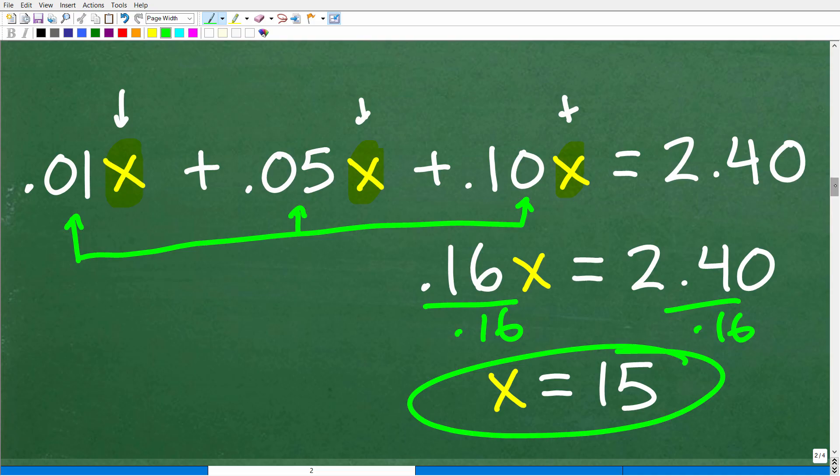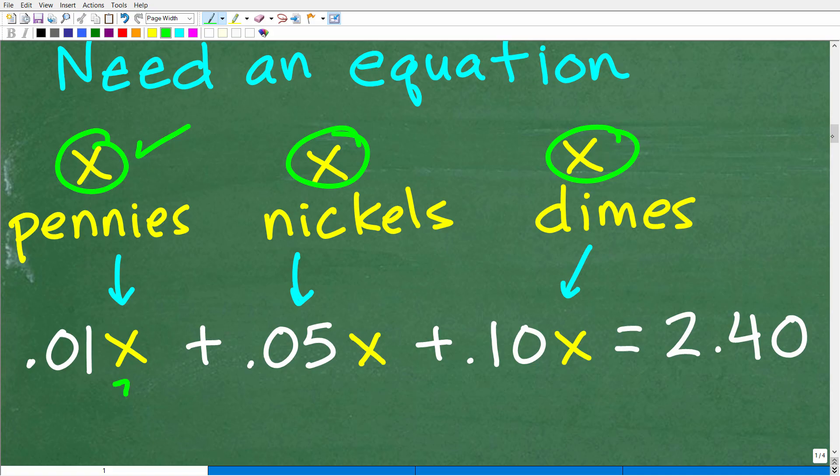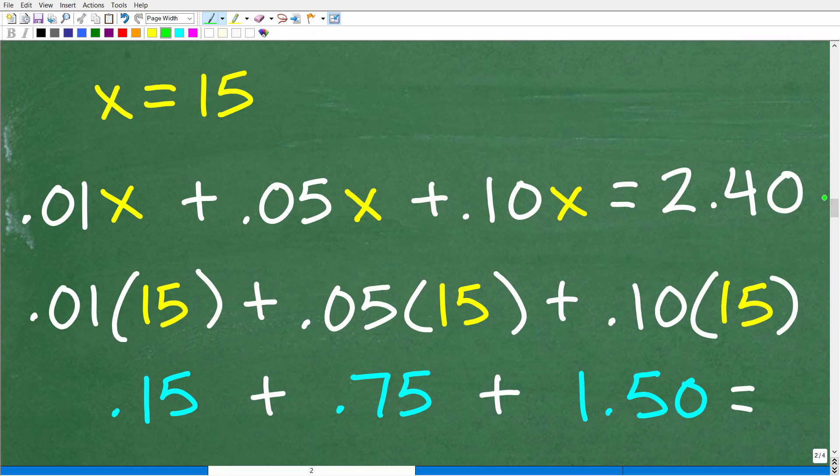What is that? x was the number of coins. This is what we're looking for. But let's double check this. Let's make sure this is a good answer. If Bob said, I want an equal number of pennies, nickels, and dimes for my $2.40, and we said take 15 of each and you'll get your $2.40, let's just double check that. If we have 15, we're going to plug in for these x's 15 because that is the solution.